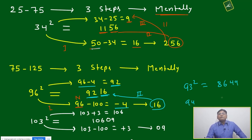94 square: just 94 minus 6. It will be 88. Initial two digits just by seeing the number we'll be able to find. Last two digits also, it's not difficult.